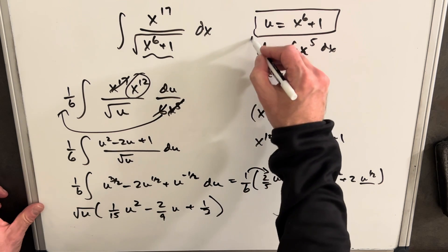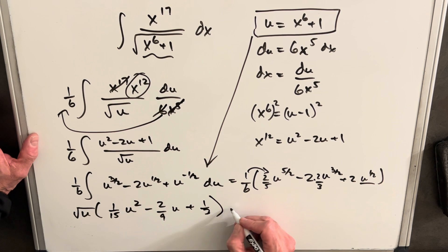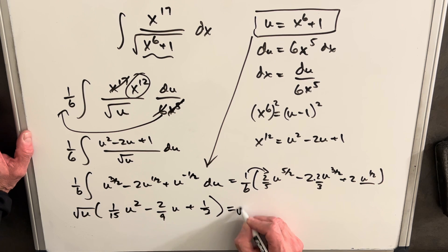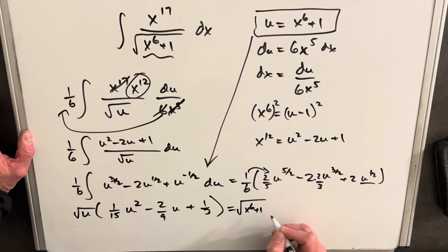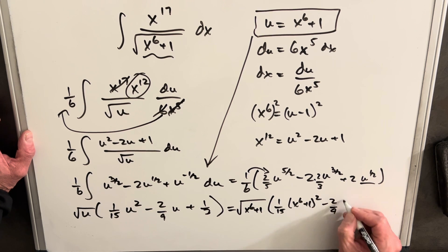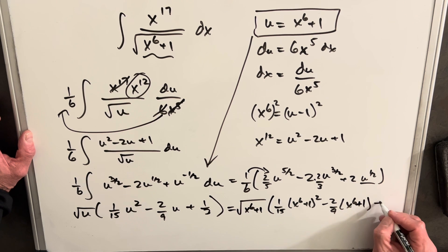Okay, now we're going to back substitute with our u value down here. So we're going to have square root of x to the 6th plus 1, 1 15th. Sorry, u squared is going to be x to the 6th plus 1 squared, minus 2 9ths, x to the 6th plus 1, then plus 1 3rd.